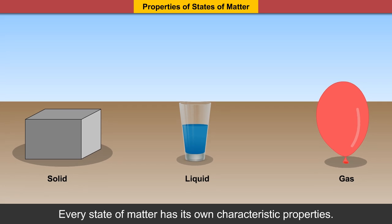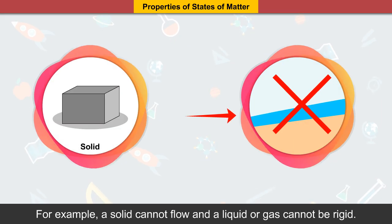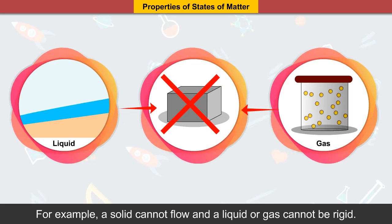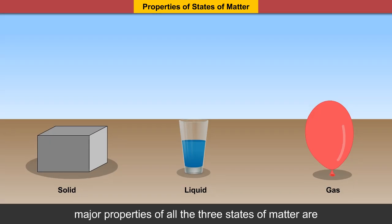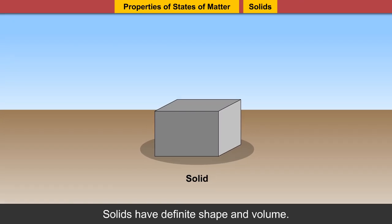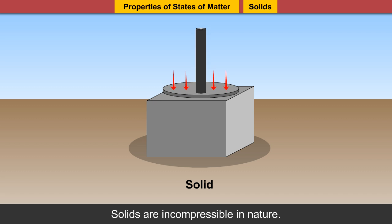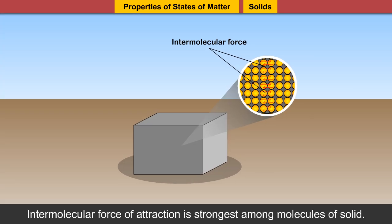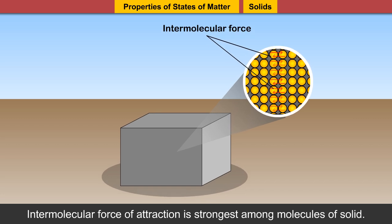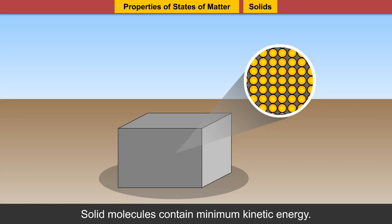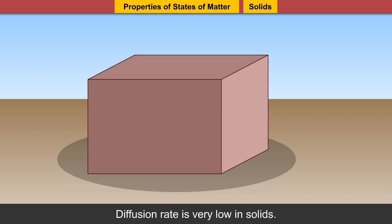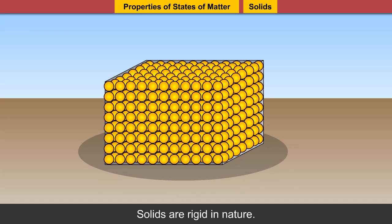Every state of matter has its own characteristic properties. For example, a solid cannot flow and a liquid or gas cannot be rigid. All these properties differ states of matter from each other. Solids have a definite shape and volume. Solids are incompressible in nature. Intermolecular force of attraction is strongest in solids. Intermolecular spacing is least in solids. Solid molecules contain minimum kinetic energy. Diffusion rate is very low in solids. Solids are rigid in nature.